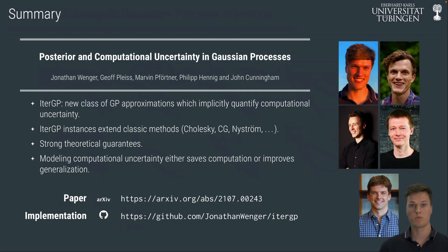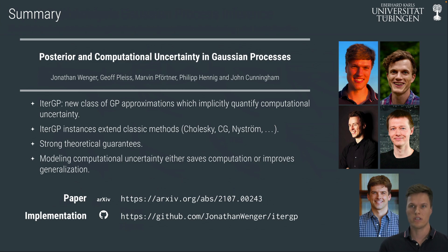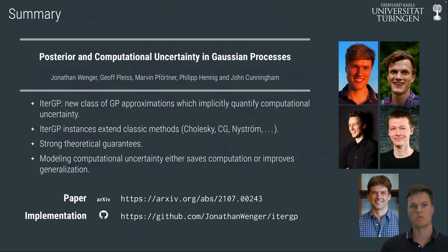In summary, we propose a new class of GP approximations which quantify the approximation error in the form of computational uncertainty. This family generalizes a bunch of classic approximations, or modifies them to include this approximation error, and we get strong theoretical guarantees that are computable at runtime. Equipping these methods with the combined posterior we suggest, you can either save computation for CG-based inference or improve generalization. You can find the paper on arXiv or the implementation on GitHub.